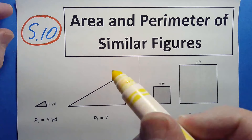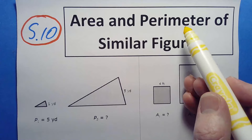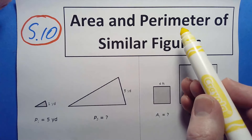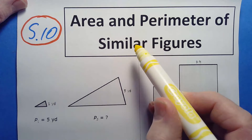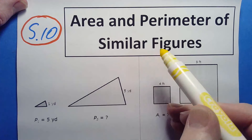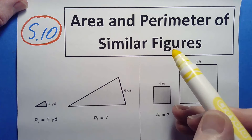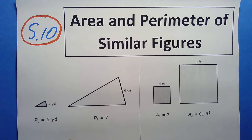In today's video we're going to be talking about the area and the perimeter of figures. What's essential about this discussion is that these figures are similar. Similar figures have the same shape — another way of thinking of that is that all the corresponding sides are going to be proportional, and all the angles are going to be the same too.